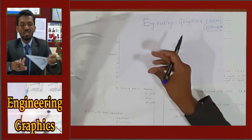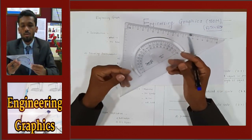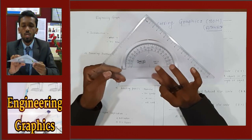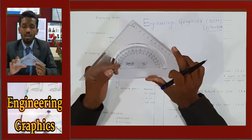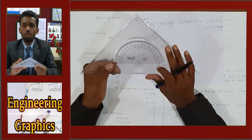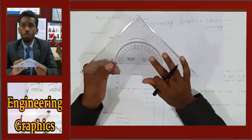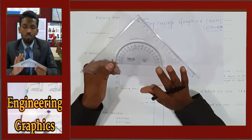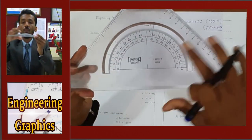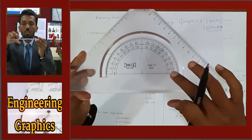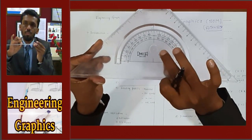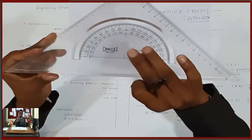If you have a set square, you can use a protractor for angle measurement. For example, if you are trying to draw a 45-degree angle, you can use a set square.